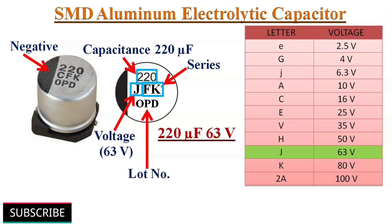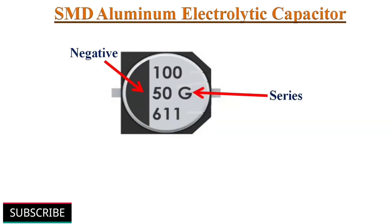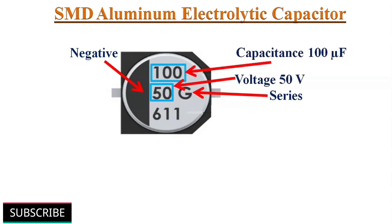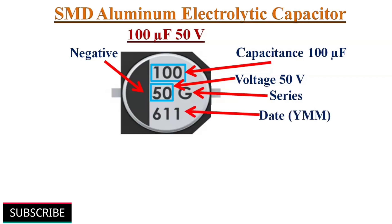Another format is Kemet's EDK series, where capacitance in microfarads and voltage rating is directly printed on the surface. Here the capacitance value is 100µF 50V. The year and month of manufacture is printed at the bottom — this capacitor was manufactured in November 2006.